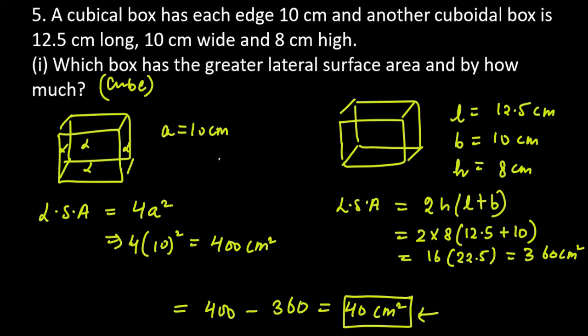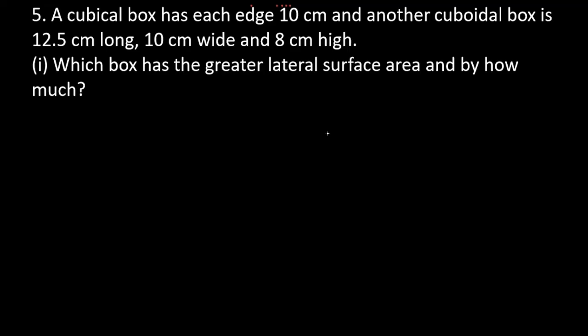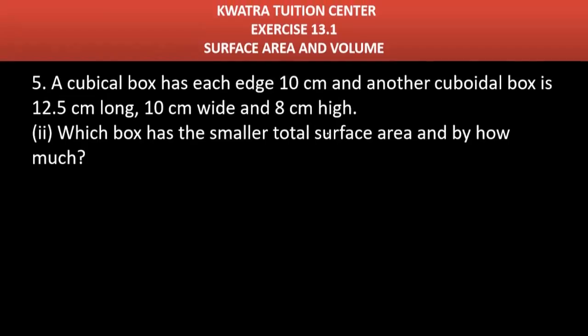Second part of the question. Let's go. Second part says which box has the smaller total surface area. Let's say TSA of cube. So what is TSA of cube? How many faces do we have? 6, and all of them are square, so we have 6a². Our formula, how much of a value? 10.